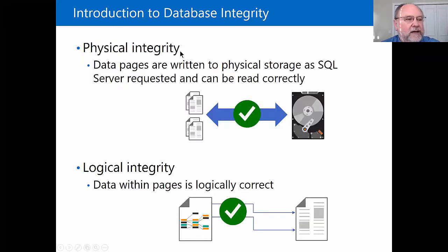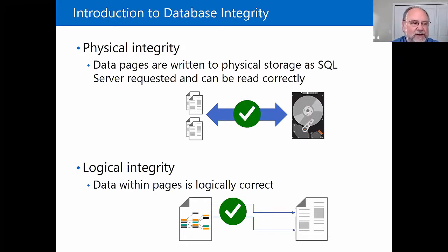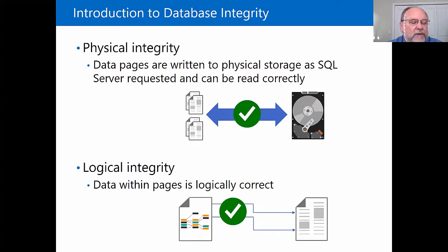There are two kinds of integrity: physical and logical. Logical integrity is when the pages in the database are out of order — it's going to affect performance but we're not losing data. Physical integrity, on the other hand, is a real problem. As a disk gets older and starts losing media, sectors or clusters get corrupted on the physical media and the data stored there gets wiped out.